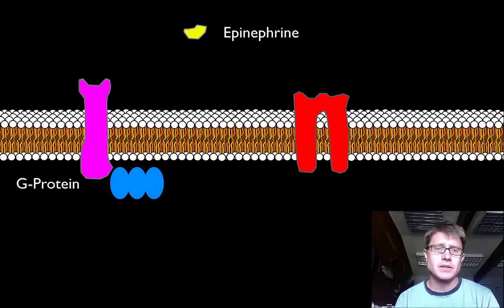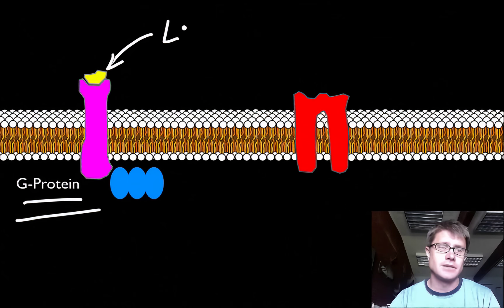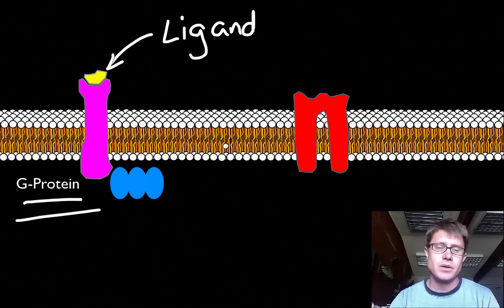So epinephrine is going to dock with this receptor. And in this case it's going to be called a G-protein receptor. And so the epinephrine is what's called a ligand. And so a ligand is going to be a chemical. It's a chemical that can't make its way through this cell membrane. It can't make it through this hydrophobic region. So it's going to dock with the G-protein on the outside.